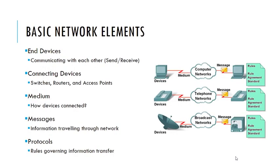The basic network elements are mainly the end devices — the communicating devices, the senders and receivers, the sources and destinations of information. These are the target of the network: to communicate with each other. Other devices exist inside the network as intermediate or connecting devices, such as switches, routers, and access points.